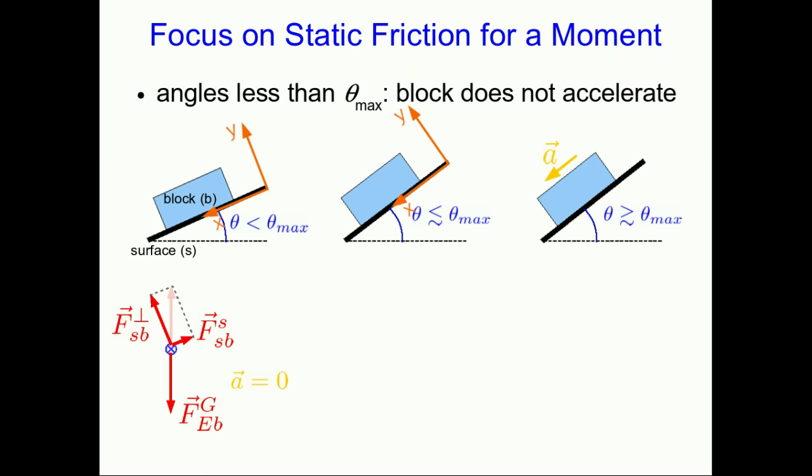To learn something about static friction, let's just focus for a moment on angles less than theta max. So we're talking about situations where the block has not started sliding. We know that as we adjust the angle theta, the perpendicular and frictional forces are adjusting so that the vector sum of forces remains zero. It becomes easier to see what's happening if you think of decomposing the gravitational force into its x and y, or parallel and perpendicular, component vectors.